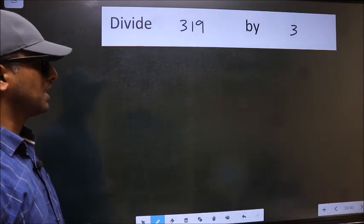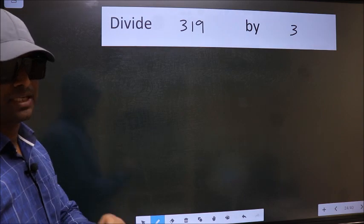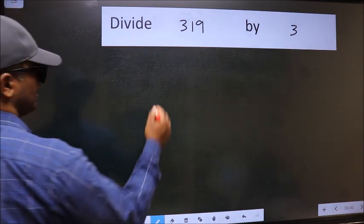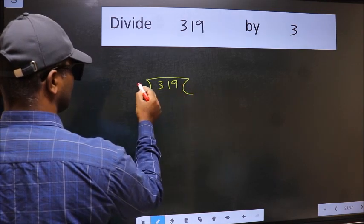Divide 319 by 3. To do this division, we should frame it in this way. 319 and 3 here.